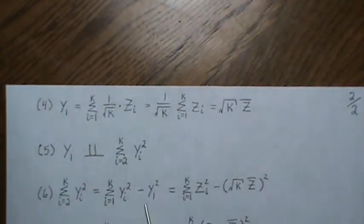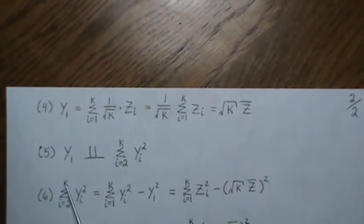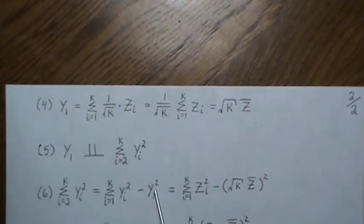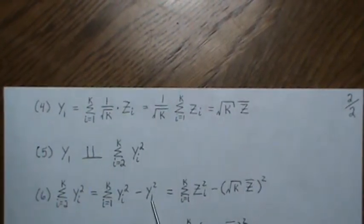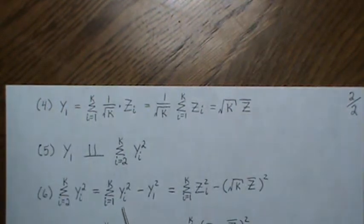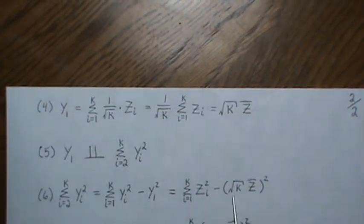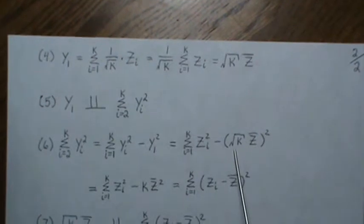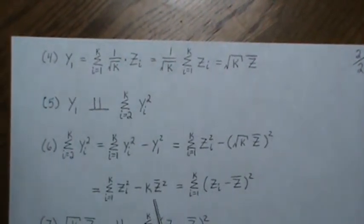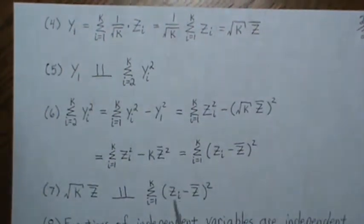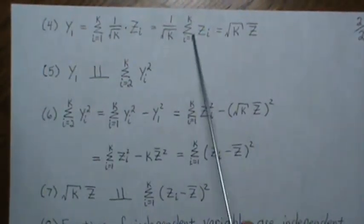If we look at the sum Σᵢ₌₂ᵏ yᵢ² and add and subtract y₁², we still have the full sum. Replacing y₁ with √k · z̄, and using the fact that the sum of squared yᵢ's equals the sum of squared zᵢ's, we can rewrite this expression. Expanding the squared terms, we get the sum Σ(zᵢ − z̄)².